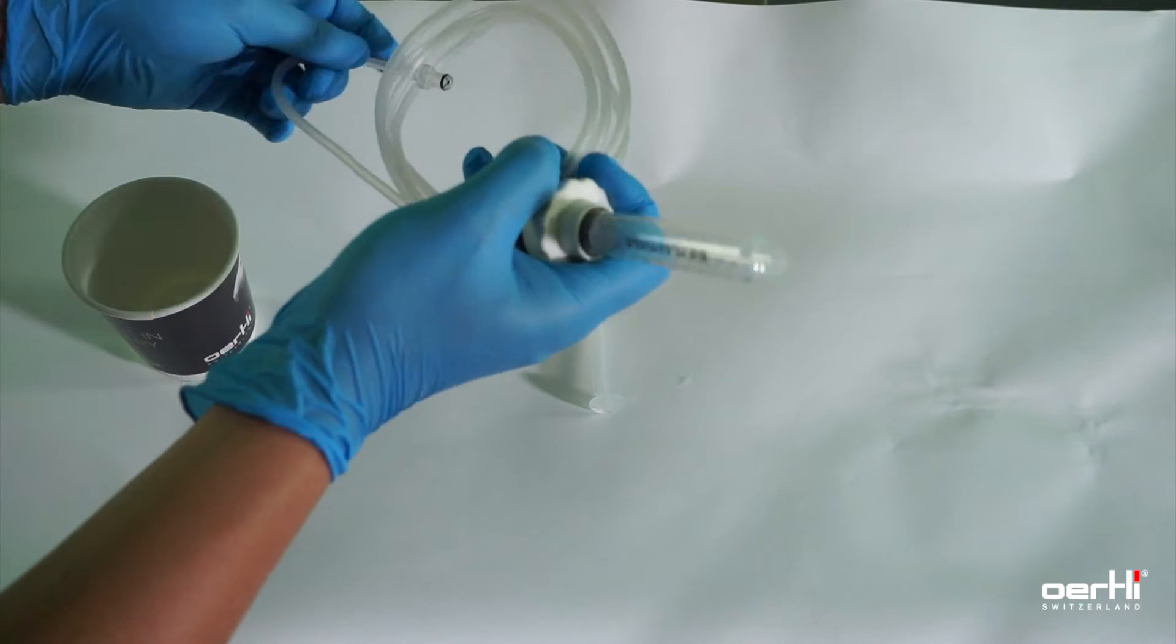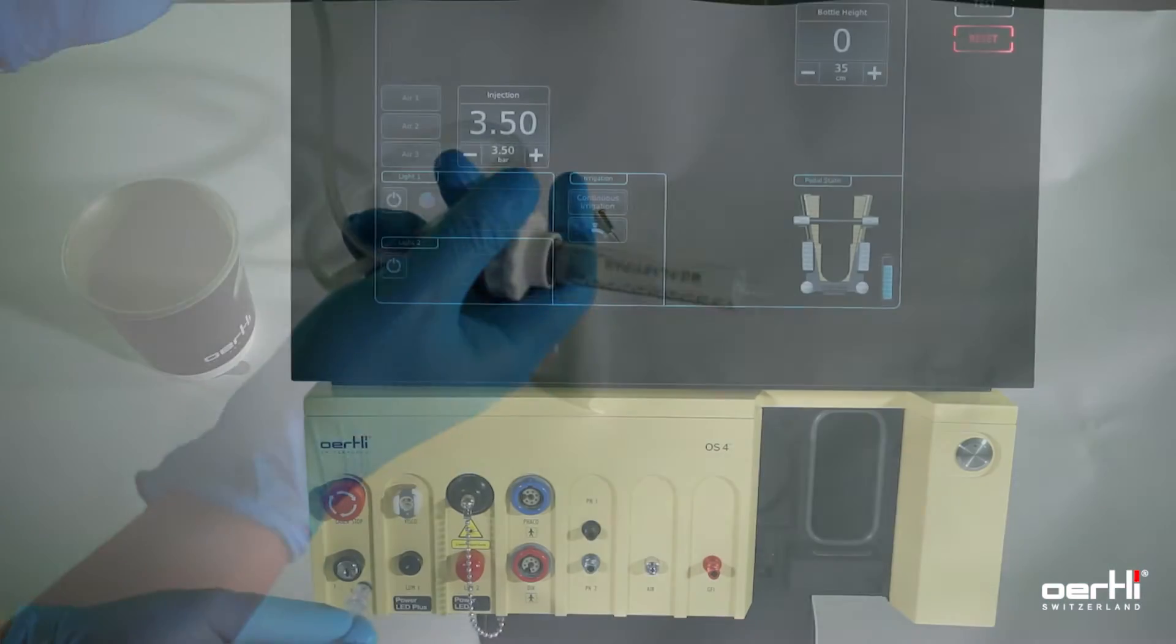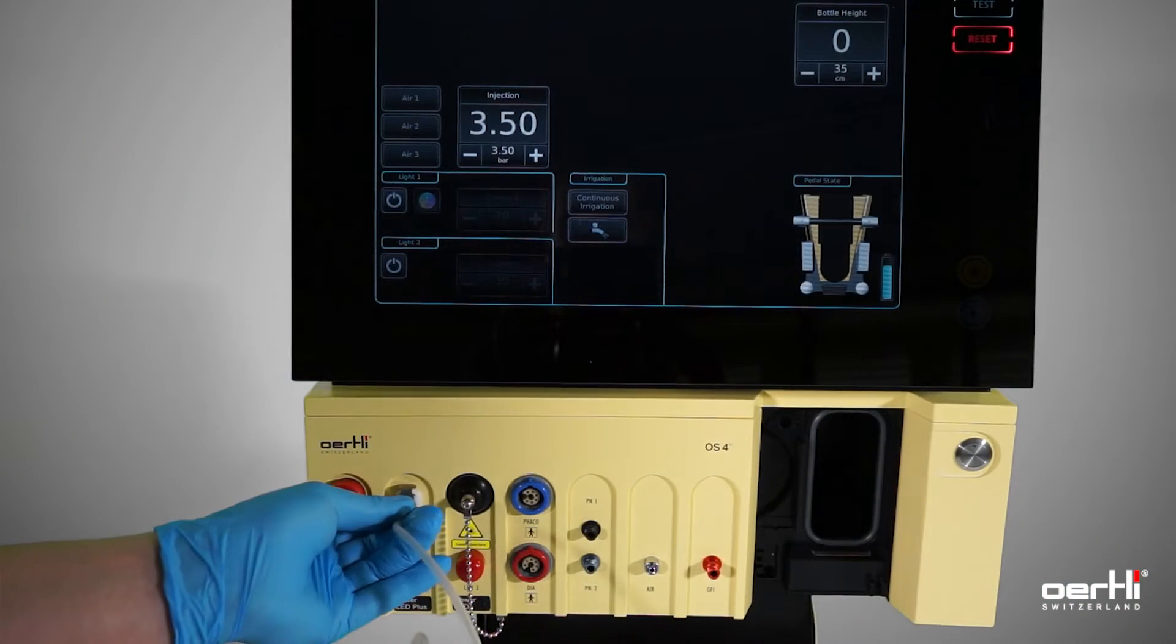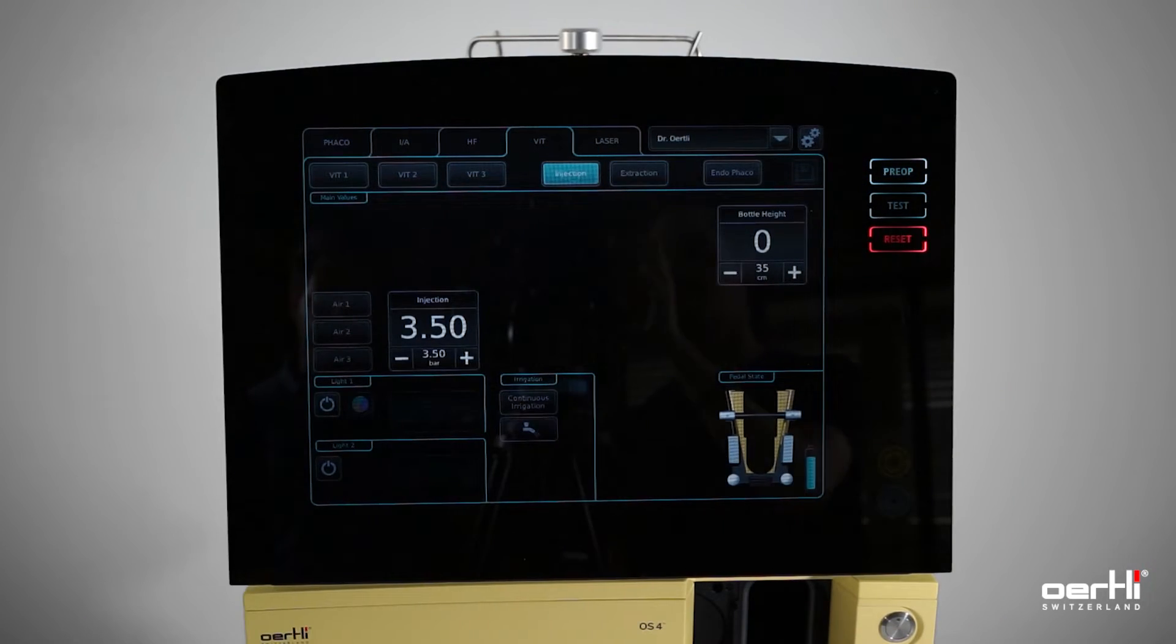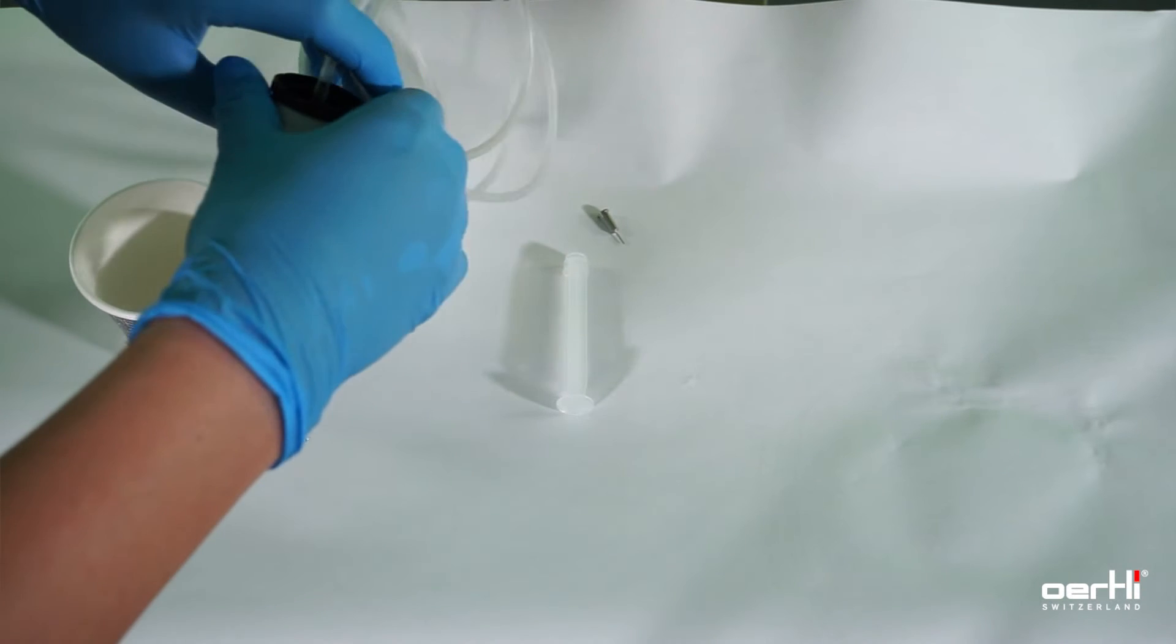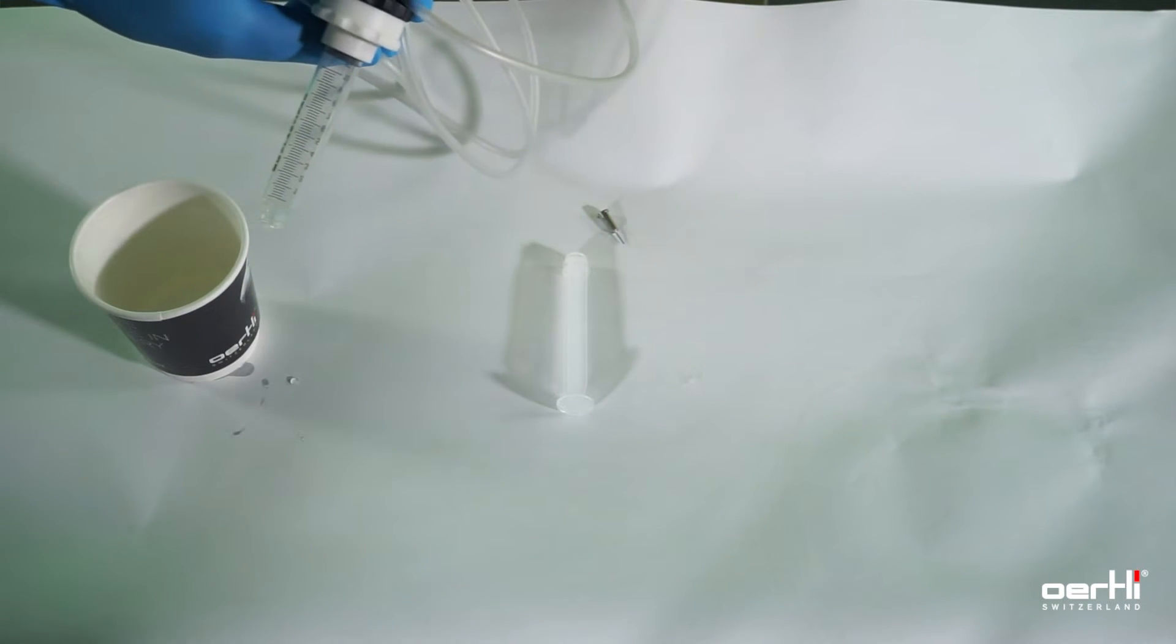To fill the syringe, now connect the syringe with your device. Go into injection function. Move the plunger stopper all the way down by using the paddle.